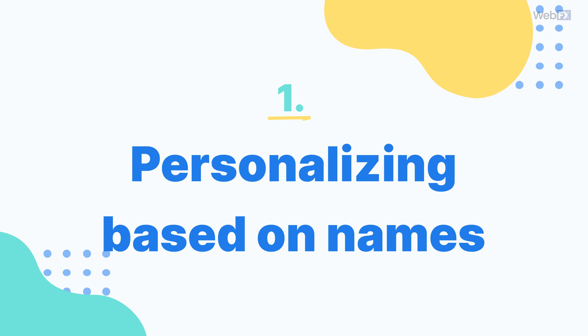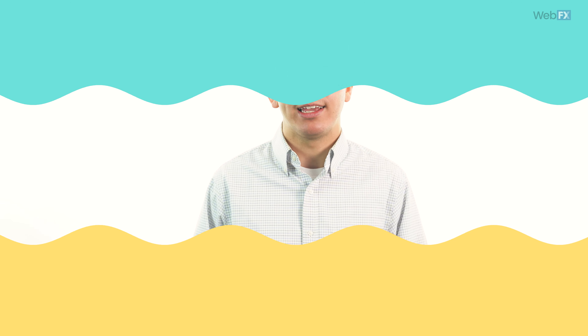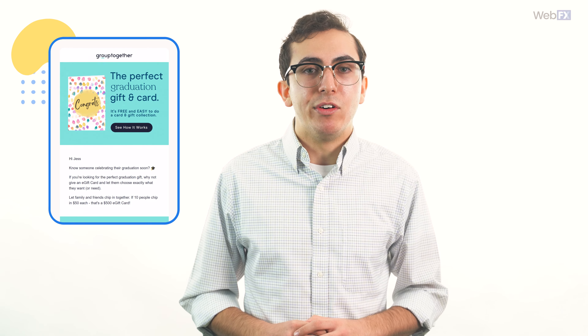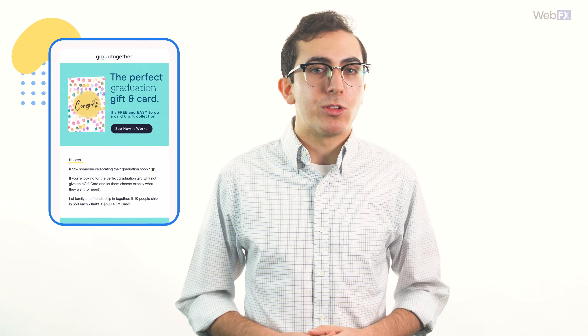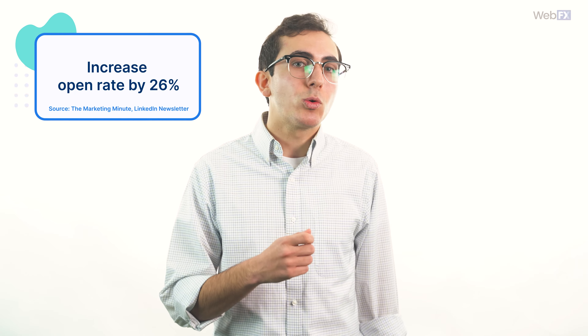The first way to personalize is based on people's names, especially in emails. It's really simple to have them autofill the name of each person they go to. It's not much, but it works. Using someone's name in the subject line of an email can increase the open rate by 26%. And when paired with other marketing personalization tactics, a name can go even further.